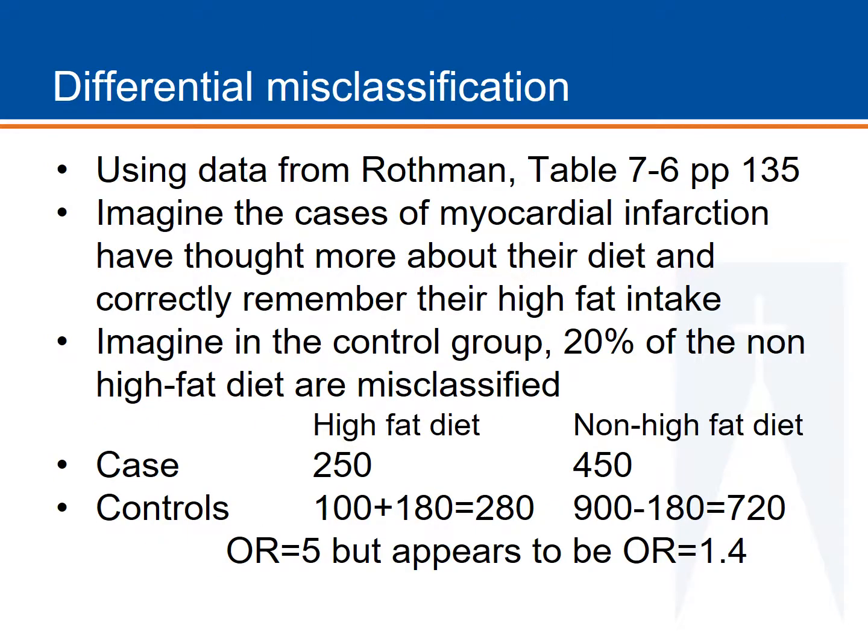In reality, cases and controls remember their diet differently, a result that would cause differential misclassification. Differential misclassification can go either direction. Here is an example where the difference would result in an attenuated odds ratio, or an odds ratio closer to 1. Imagine if the controls who consume a non-high fat diet are misclassified as having a high fat diet. This brings the odds ratio down because controls were wrongly classified as having a high fat diet, making them more similar to the cases than is true.